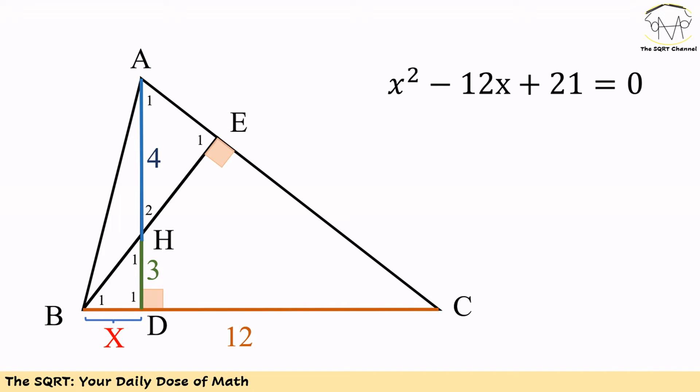We can solve this quadratic equation. Since BD is smaller than DC, then BD equals 6 minus square root of 15, and CD equals 6 plus square root of 15.